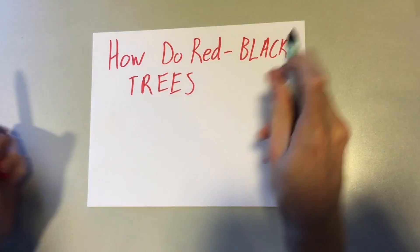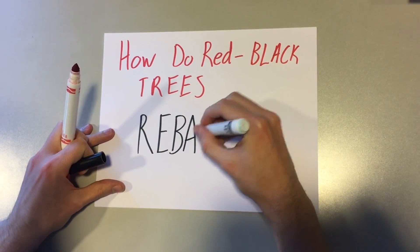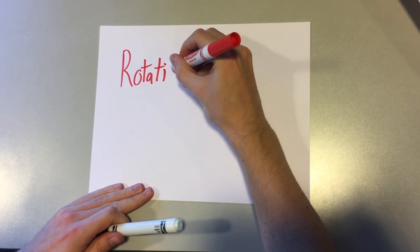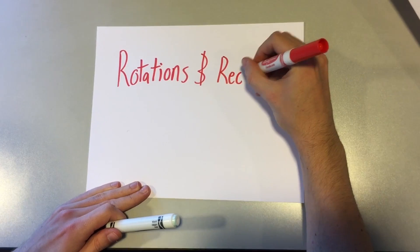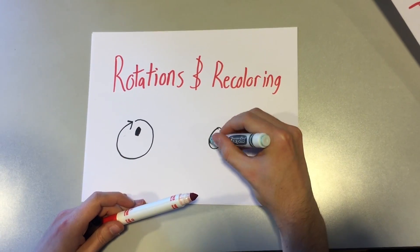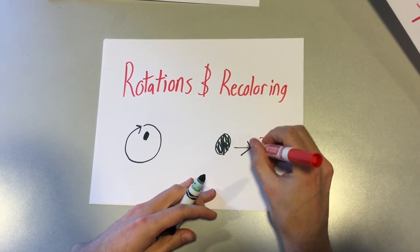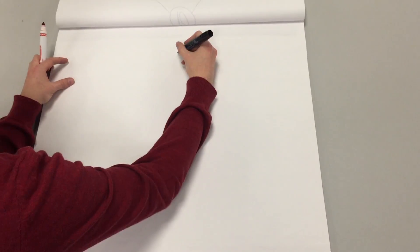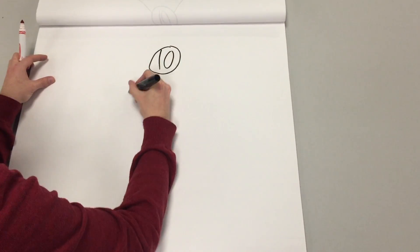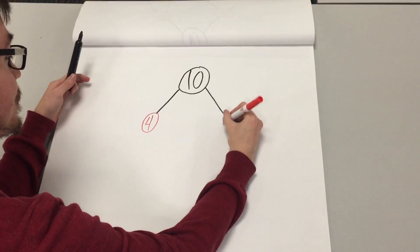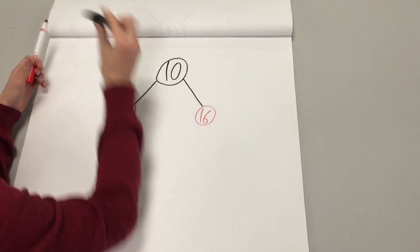How do red-black trees rebalance? By rotations and recoloring. Here is an example. Rebalancing is achieved by a series of rotations and recoloring of nodes to ensure that the invariant rules are not broken after the operation is complete.